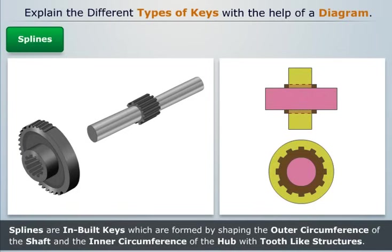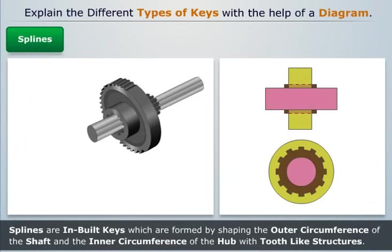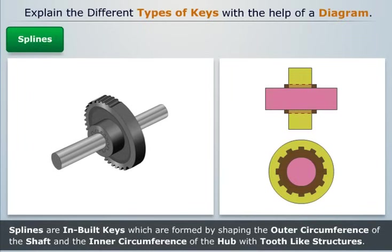Splines are inbuilt keys which are formed by shaping the outer circumference of the shaft and the inner circumference of the hub with tooth-like structures. They are used when there is relative axial motion between the shaft and the hub.